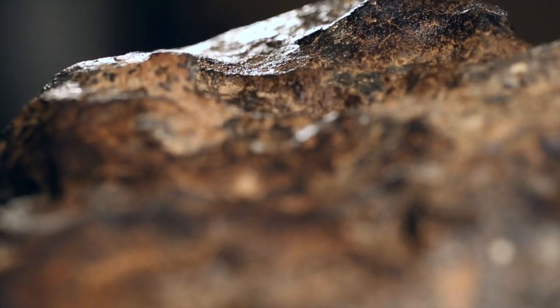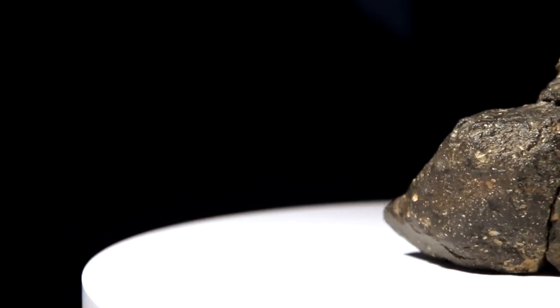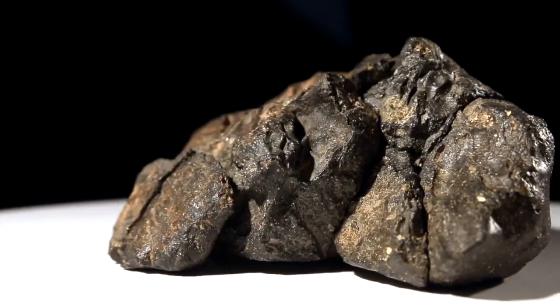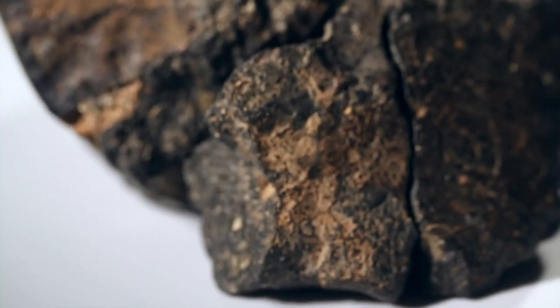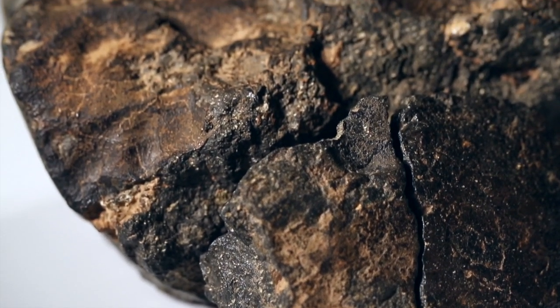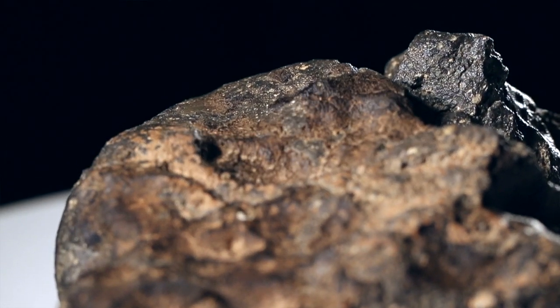Please note the partial fusion crust visible on one side. This was caused by heat ablation as the meteorite plummeted through our atmosphere at tremendous speed. And to our knowledge, there is only one other recorded lunar meteorite that displays fusion crust and it's not nearly as impressive as this one.